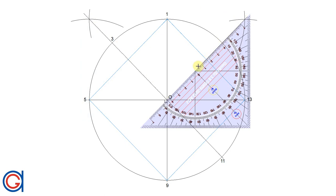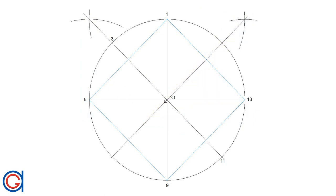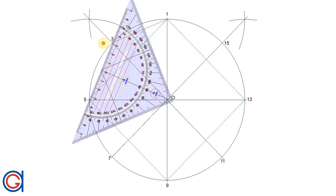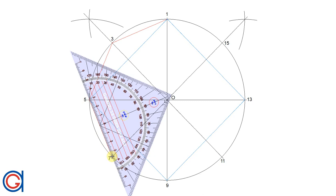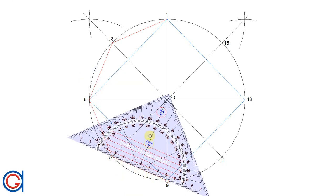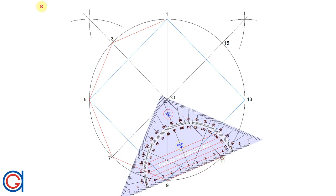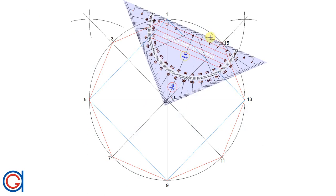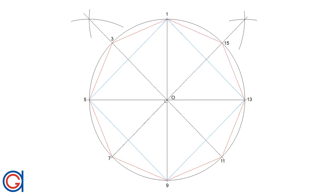We do the same on the other side, joining the intersection through the origin and elongating it to the other side of the circumference, getting another two vertices: 15 and 7. Now the next step is to join these vertices — 1 to 3, 3 to 5, 5 to 7, 7 to 9 — in a red line, obtaining an octagon, or eight-sided regular polygon, inscribed in the circle.